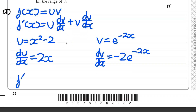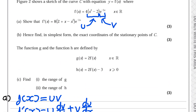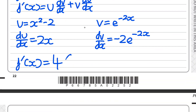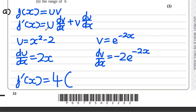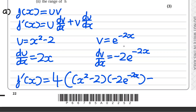So f'(x) — remembering I took the 4 out at the start, so I'm going to multiply everything by 4 — using the product rule formula: it's going to be u, which is x squared minus 2, multiplied by dv/dx, which is minus 2 e to the power of minus 2x, plus v, which is e to the power of minus 2x, multiplied by du/dx, which is 2x. Remember all of this is multiplied by the 4 at the front.